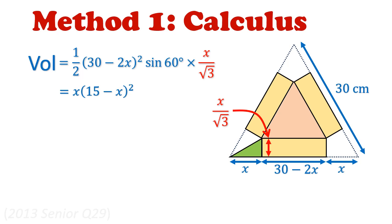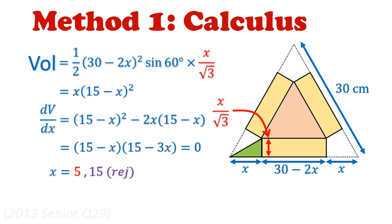Now we want the maximum volume, so we'll take dv/dx. dv/dx can be found using the product rule, and it simplifies and factorizes into (15 minus x) times (15 minus 3x). Because we want the maximum, we'll take the stationary value by equating the derivative to zero. This gives us two answers: x is either 15 or 5. Now we'll reject 15 because at 15, there'll be no base area left, so that corresponds to the minimum.